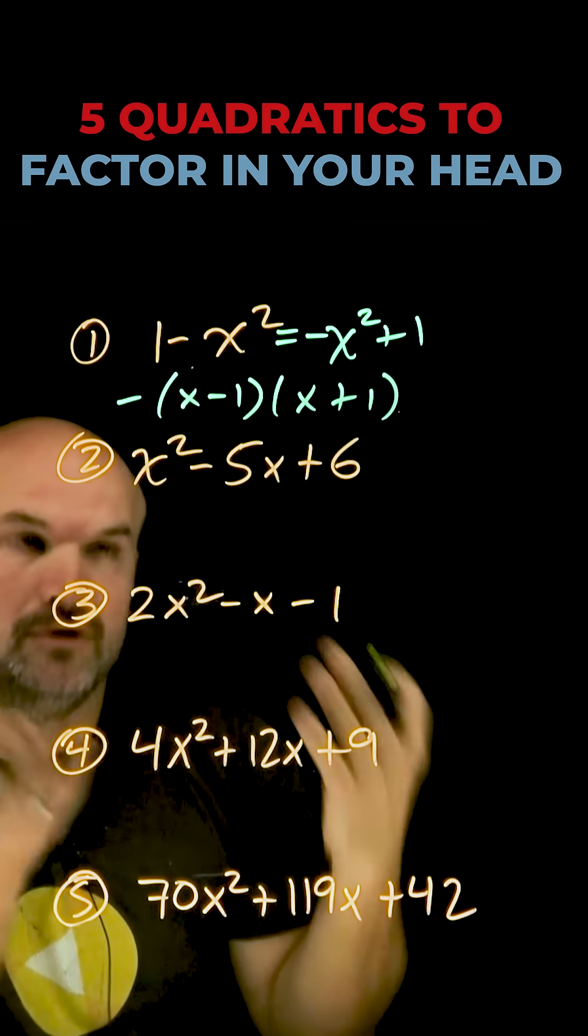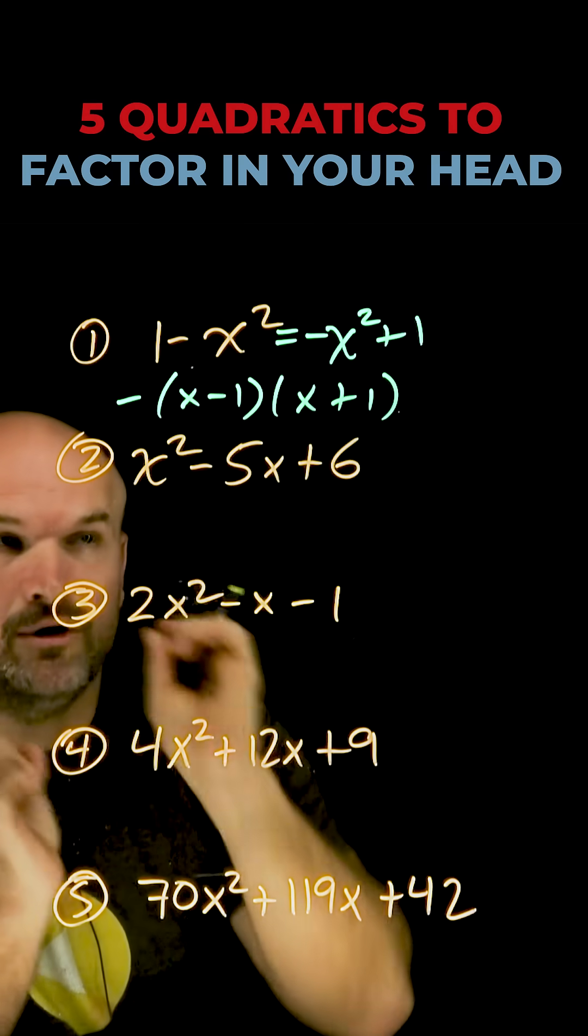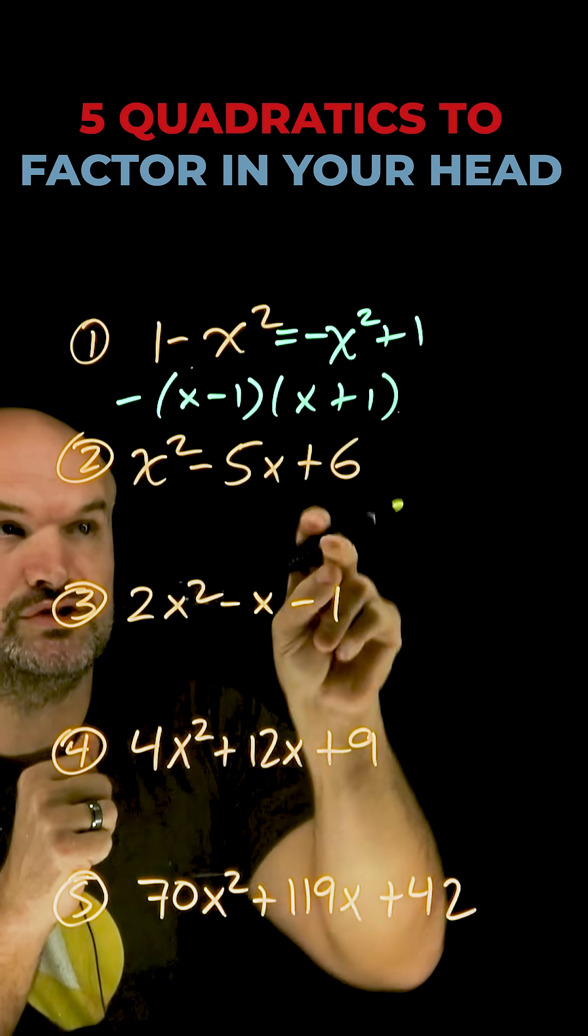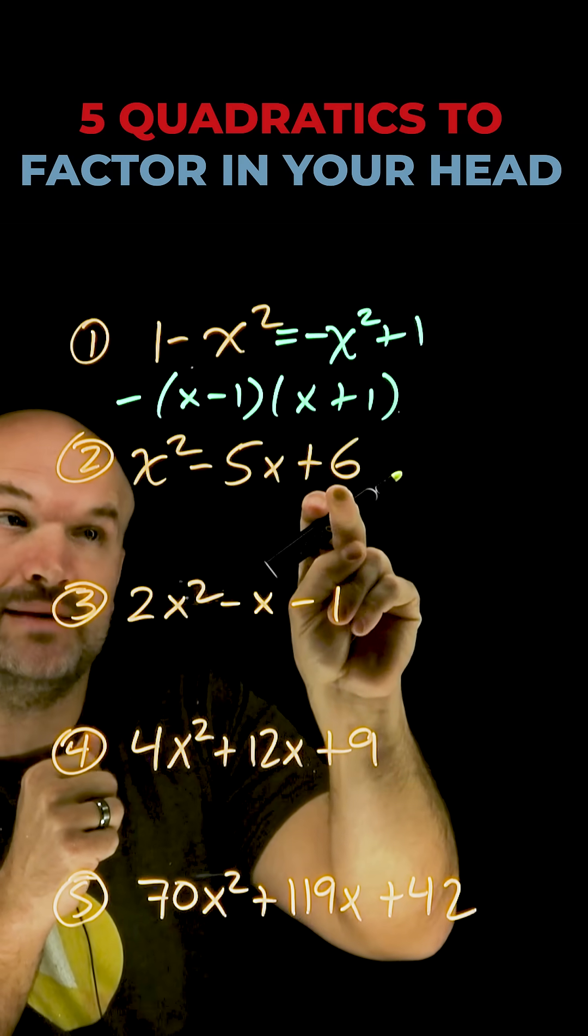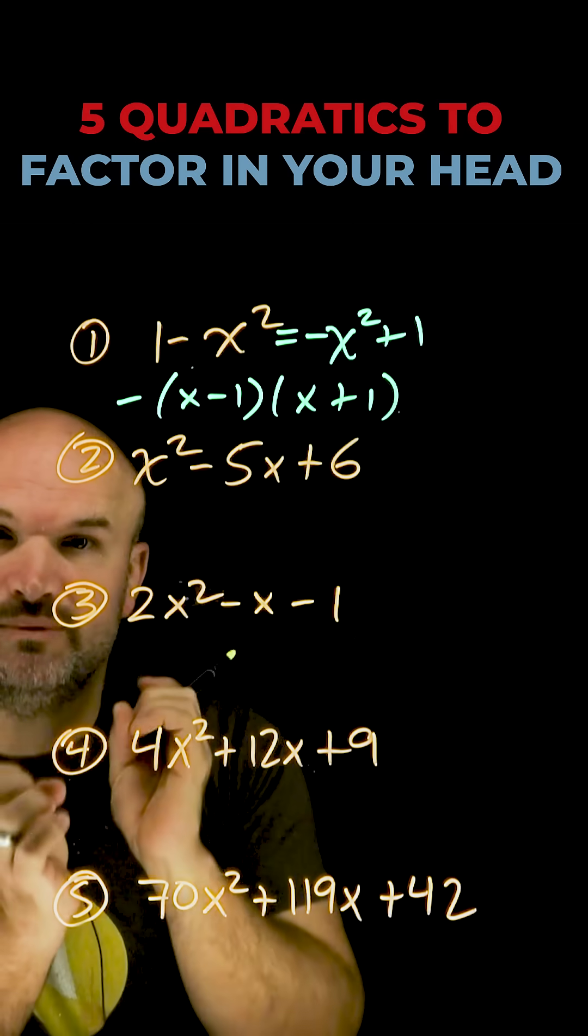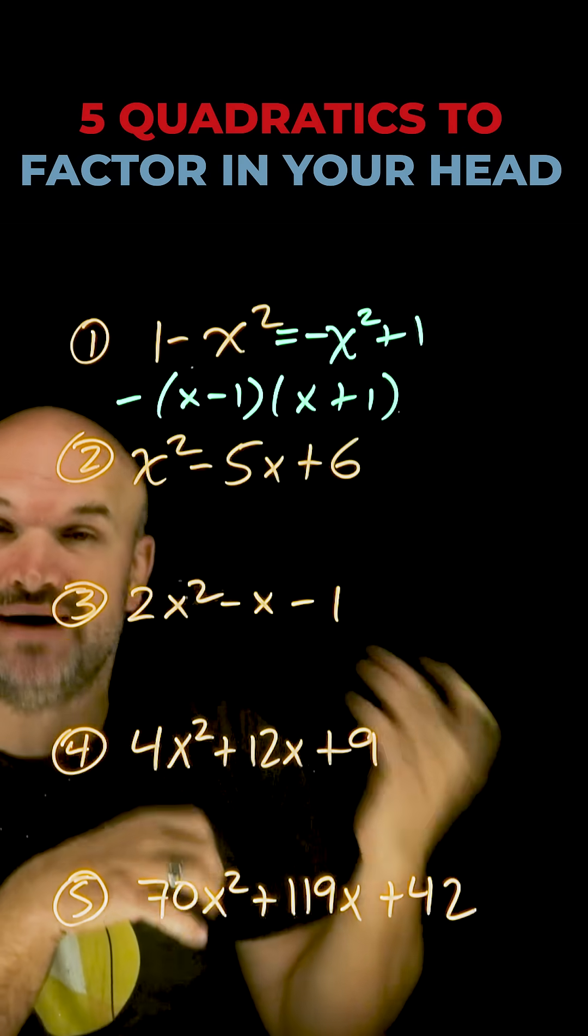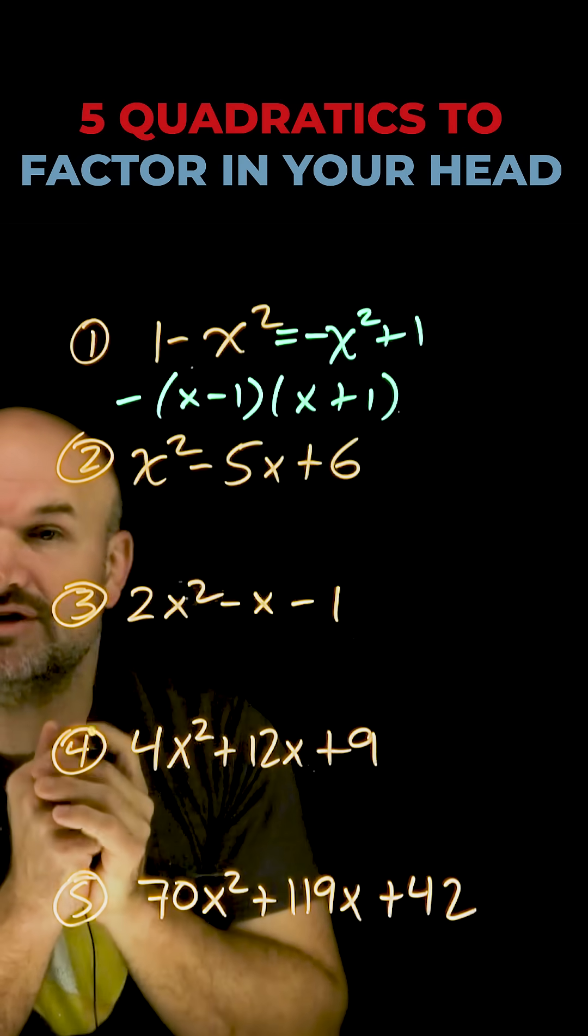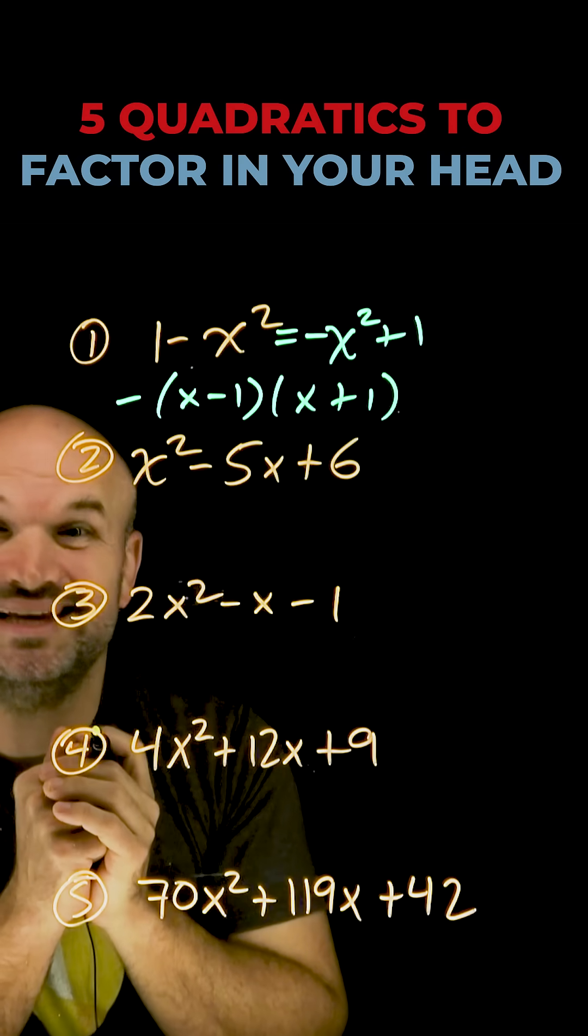The next one is going to be a trinomial. Hopefully we're pretty familiar with trinomials. Remember when you're trying to do this in your head, what you're trying to think of is what two numbers multiply to give me a positive six but add to give me a negative five. Since my last term is positive, we know both of those two numbers have to both be positive or negative. Since my middle term is negative, I know they're both going to be negative.